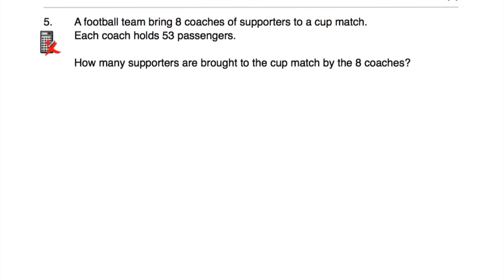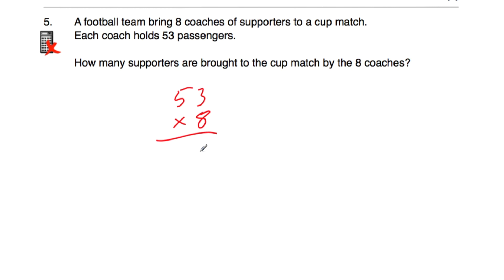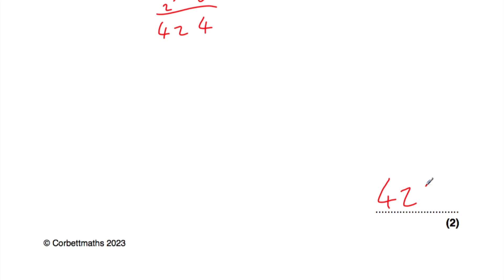Question number 5: a football team brings 8 coaches of supporters to a cup match, and each coach holds 53 passengers. How many supporters are brought to the match? We just need to do 53 multiplied by 8. 8 times 3 is 24, put our 4 down and carry our 2. 8 times 5 is 40, plus 2 is 42. So there are 424 supporters in the 8 coaches.